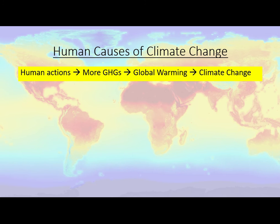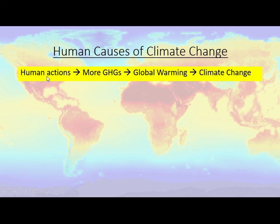Now that you have a good understanding of the greenhouse effect and the human enhanced greenhouse effect, I'd like you to consider the ways in which our actions as humans are increasing greenhouse gases. We know we are doing stuff — I want you to focus on what specifically we're doing to increase greenhouse gas emissions. Think of the chain: human actions lead to more greenhouse gases, which lead to global warming and climate change.